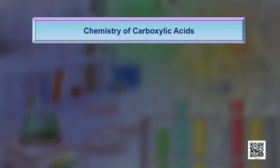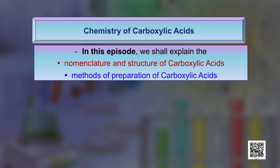Welcome learners to this third session on aldehydes, ketones and carboxylic acids, based on unit 12 of class 12th chemistry book part 2. In this session and the next session of this series, we will be discussing the chemistry of carboxylic acids. In this session we shall explain first the nomenclature and the structure of carboxylic acids, and then we will focus on the methods of preparation of carboxylic acids.